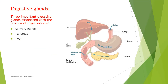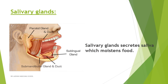In digestion, there are three important digestive glands: the salivary gland, pancreas, and liver. The pancreas produces pancreatic juice which contains digestive enzymes. The salivary gland secretes saliva in our mouth which moistens food. There are three parts of the salivary gland: the parotid gland, sublingual gland, and submandibular gland.